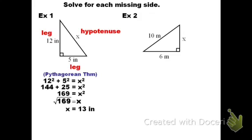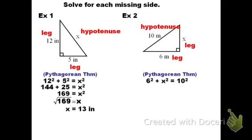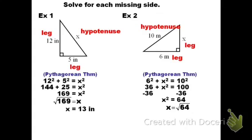In example 2, we again find the hypotenuse first. The side away from the right angle is the 10-meter piece, making x and 6 the legs. Setting this into the Pythagorean Theorem, x is one of the legs this time, so we get 6 squared plus x squared equals 10 squared. Squaring, we get 36 plus x squared equals 100. Subtracting 36 from both sides gives x squared equals 64. Taking the square root of both sides, x equals the square root of 64, which is 8. So x equals 8 meters.